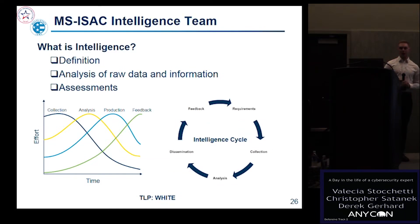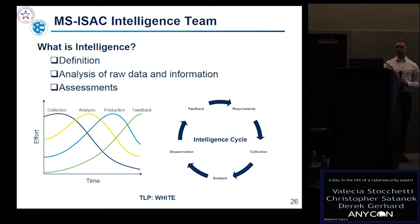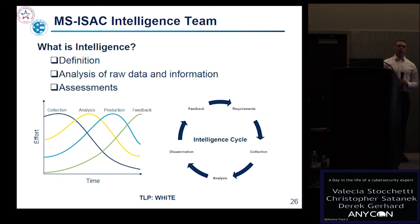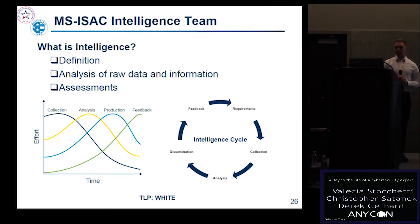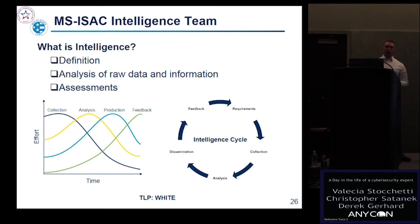Let me talk about what intelligence is, then walk through a case study of how we look at a particular malware problem through the intelligence cycle. Intelligence is often an ambiguous term — referred to as a process, a product, or an organization. For this presentation, I'll call it the analysis of raw data and information into a specific process product. We're taking all this raw information, filtering it down to what it means — making sense of a lot of information.